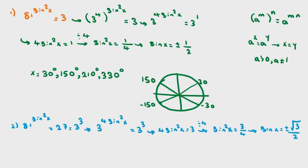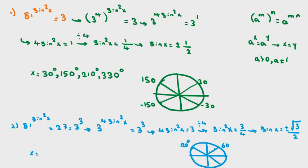Using the unit circle, sine 60° equals root 3 over 2, sine 120° also equals root 3 over 2, sine negative 60° equals negative root 3 over 2, and sine negative 120° equals negative root 3 over 2. So from 0 to 360 degrees, x equals 60°, 120°, 240°, and 300°.